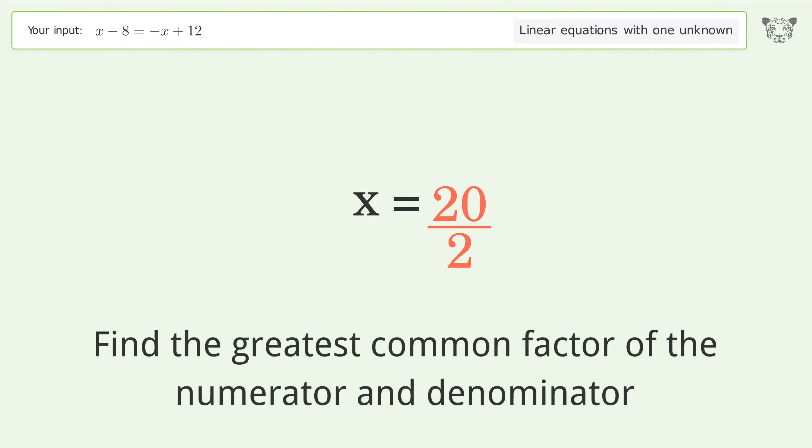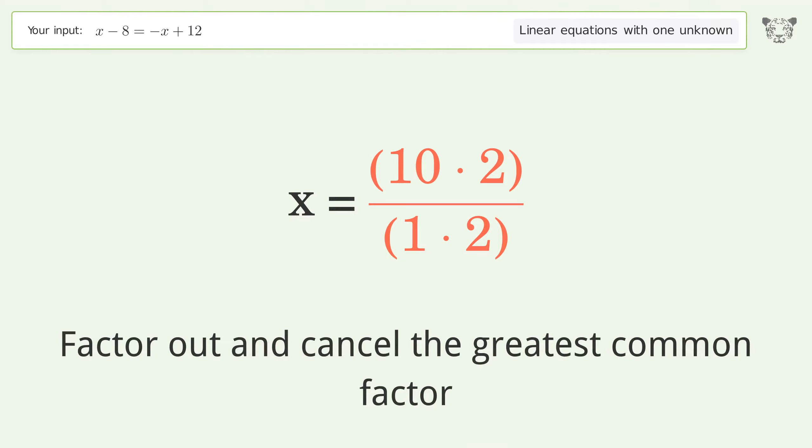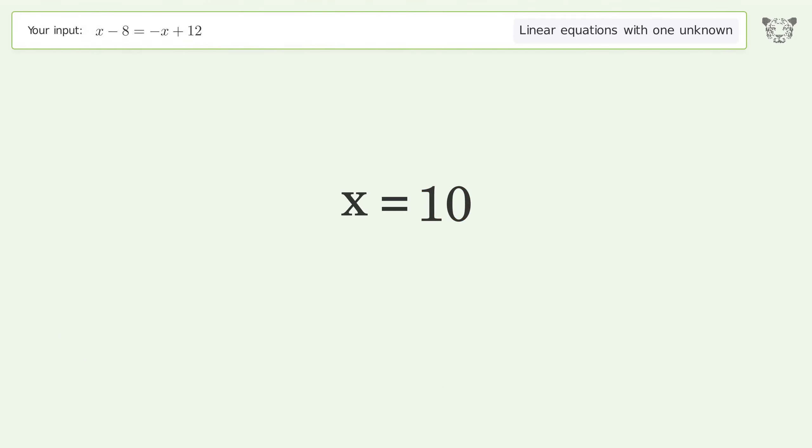Find the greatest common factor of the numerator and denominator. Factor out and cancel the greatest common factor. And so the final result is x equals 10.